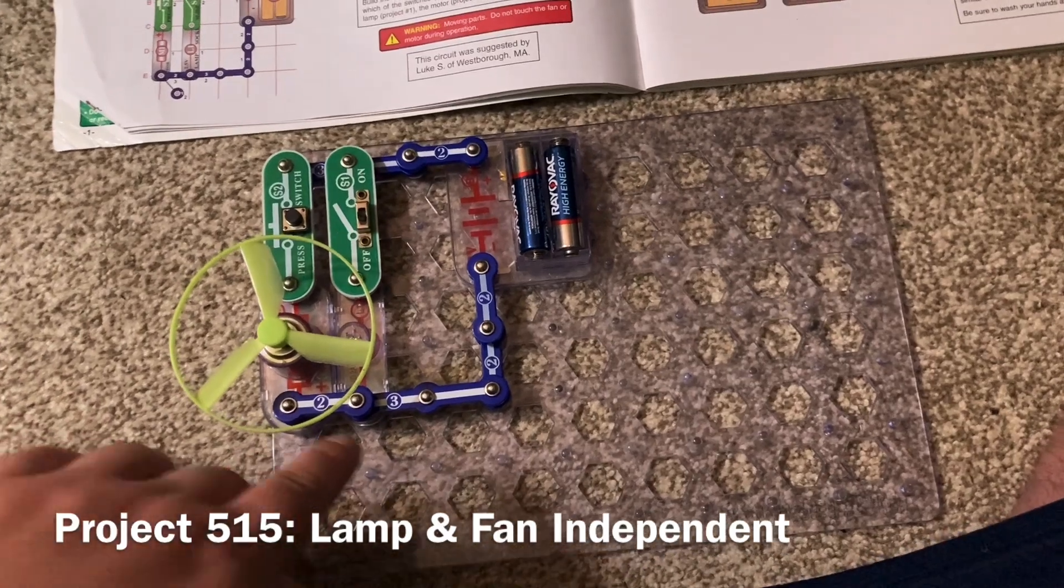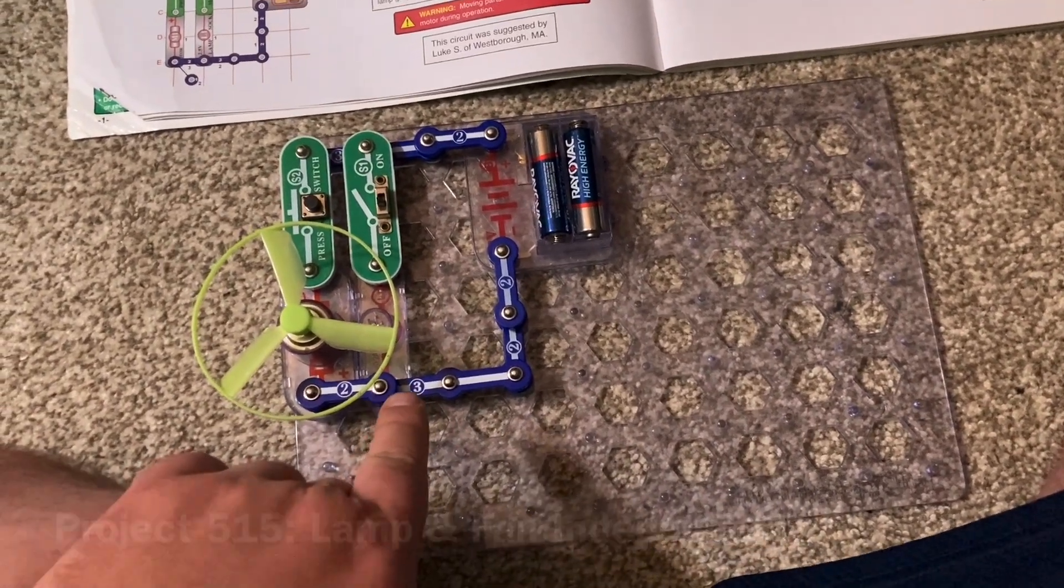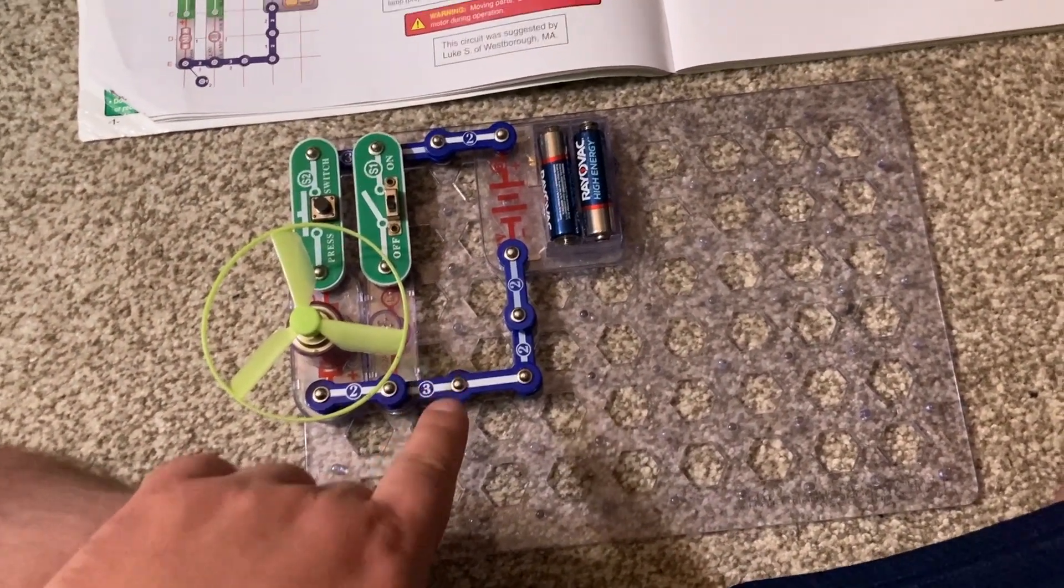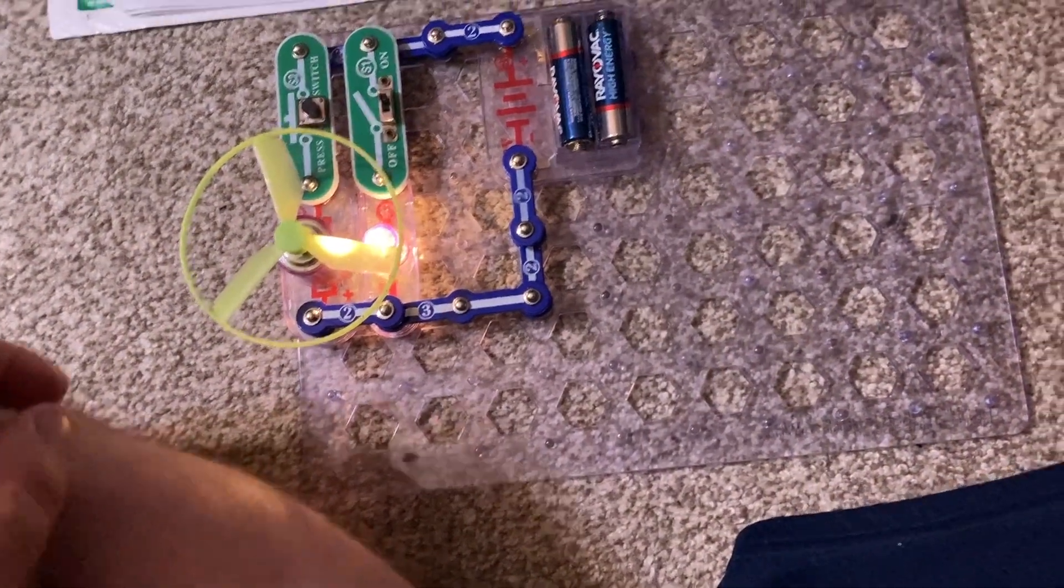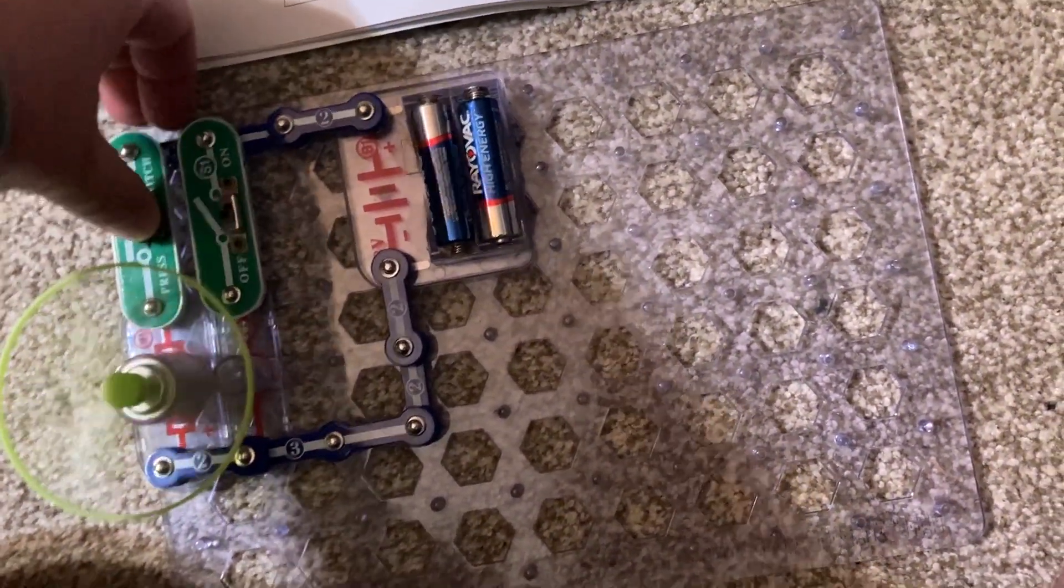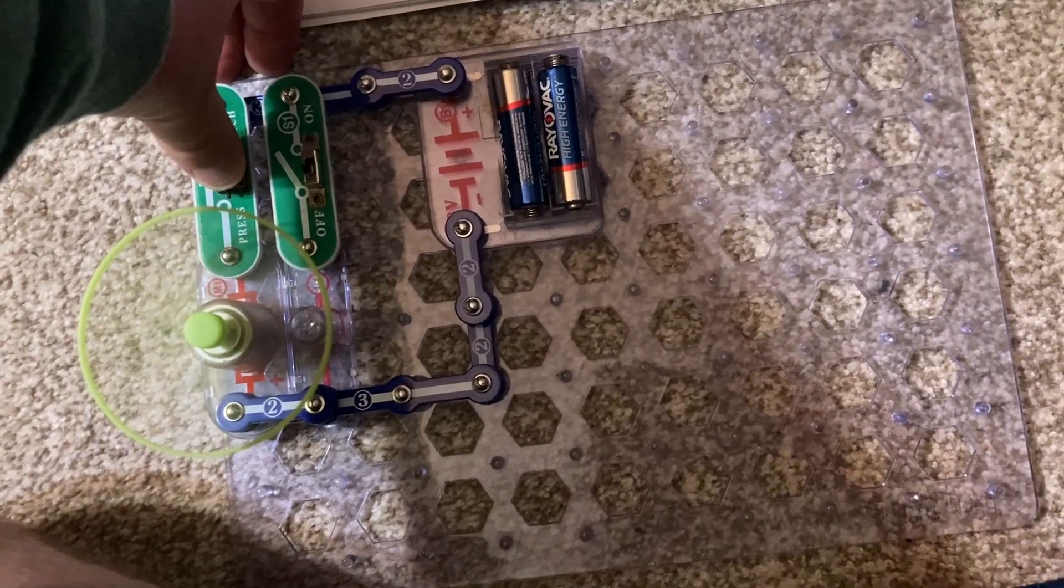This circuit allows the lamp and fan to be controlled independently by their own switches. When I turn on the slide switch, the lamp comes on. Then when I hold down the press switch, the motor and fan spin.